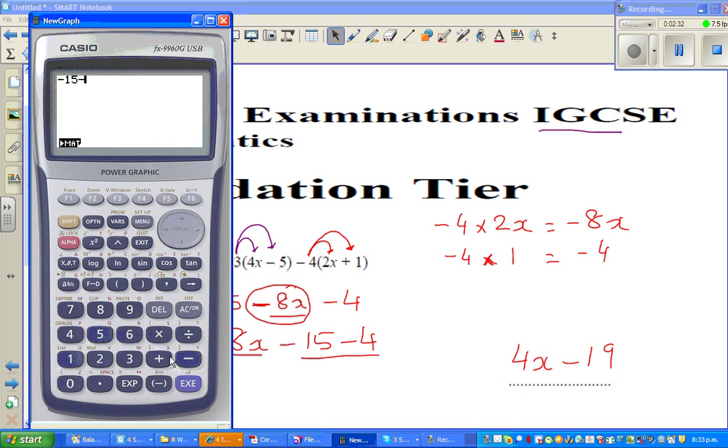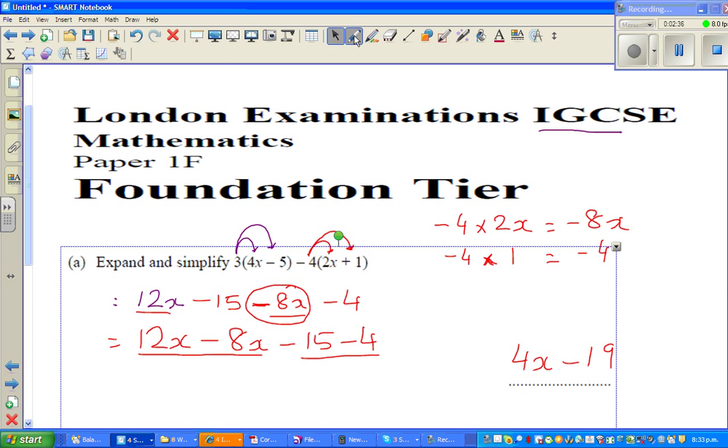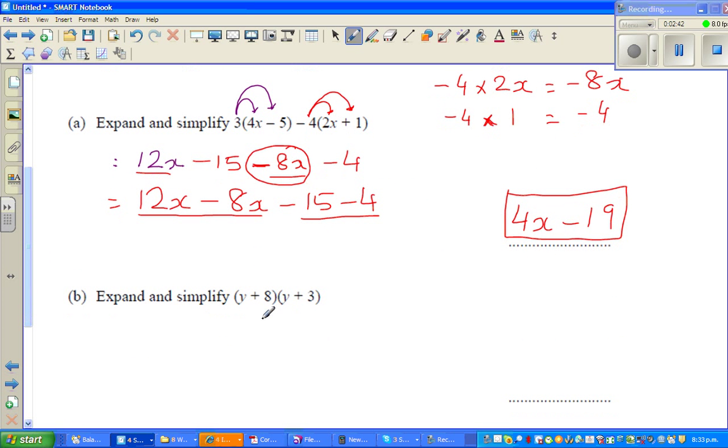So my answer is 4x minus 19. The next question, you just expand this. I'm going to do it like this: it can be written as...